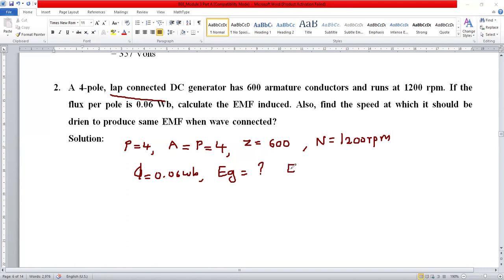We can use the formula E equals ZNφ by 60 times P by A. Substitute all the values: Z equals 600, N equals 1200 rpm, φ equals 0.06, P equals 4 divided by 60, and A equals 4. You will get the value of EG. First part is completed.